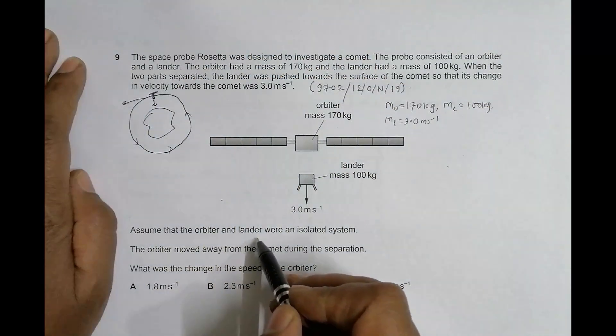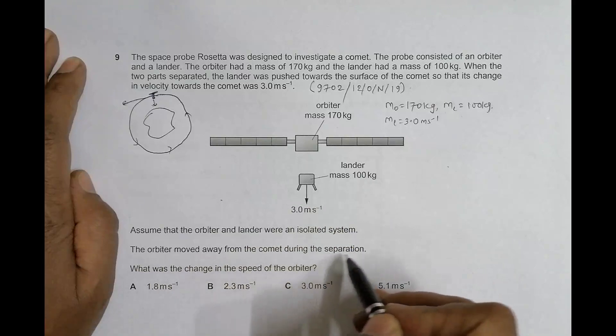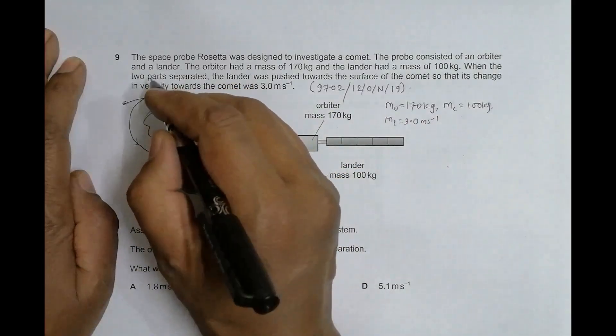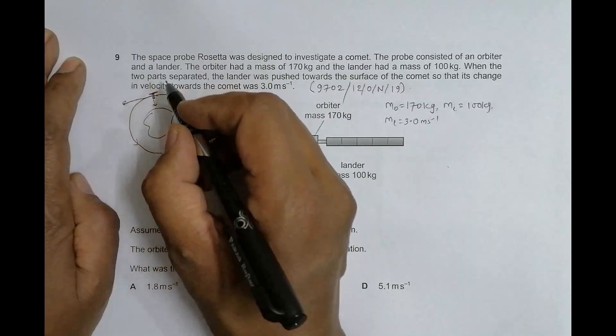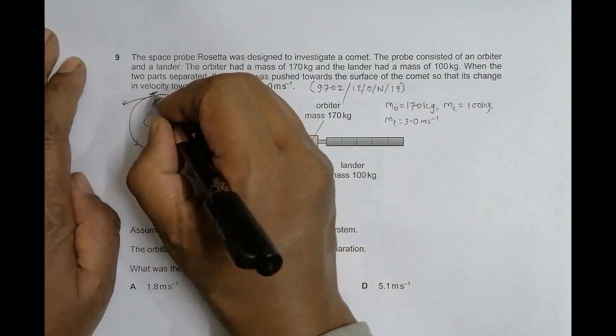Assume that the orbiter and lander were as we see them. The orbiter moved away from the comet during the separation. If lander moves like this, orbiter has to move like this - it follows from the principle of conservation of momentum. What was the change in the speed of the orbiter?